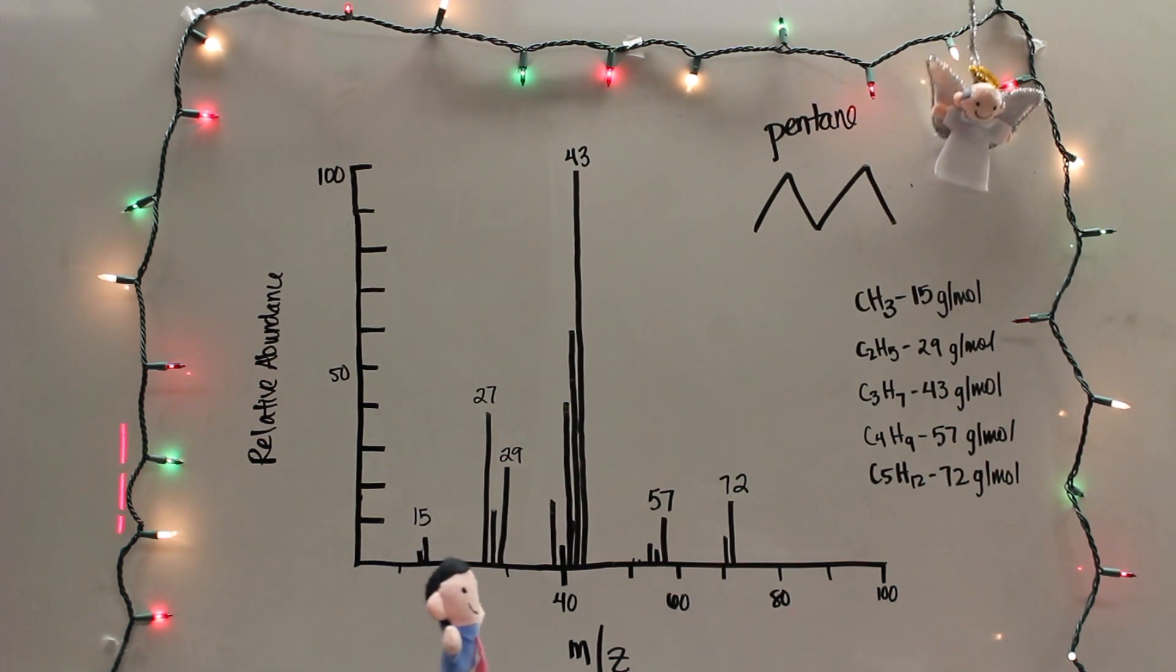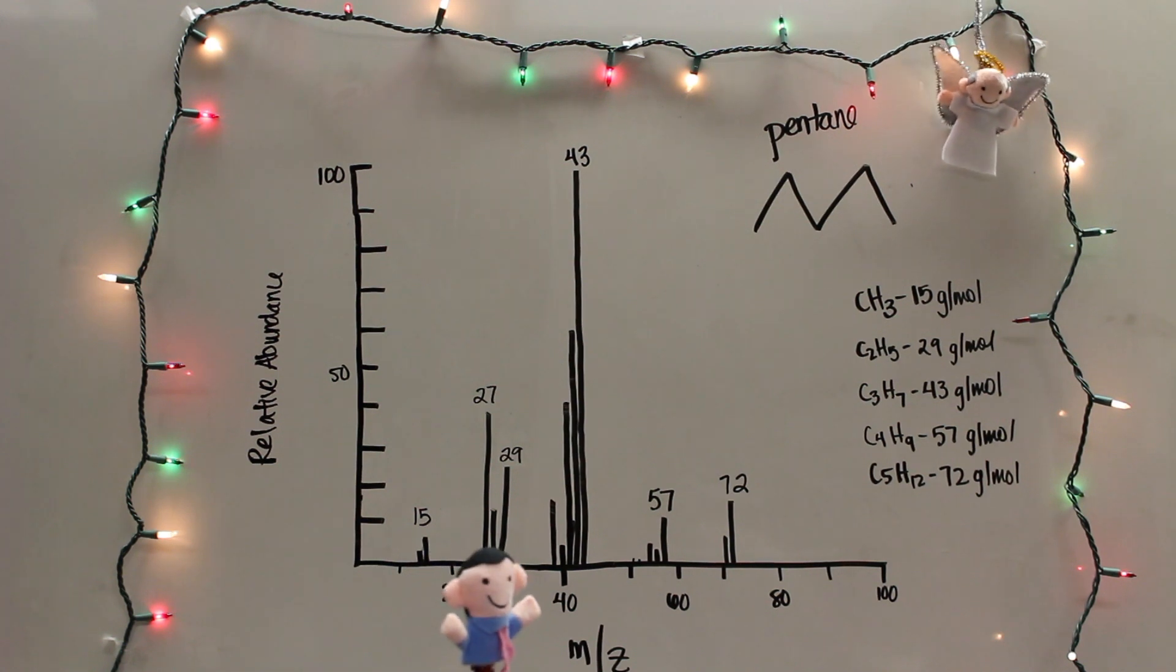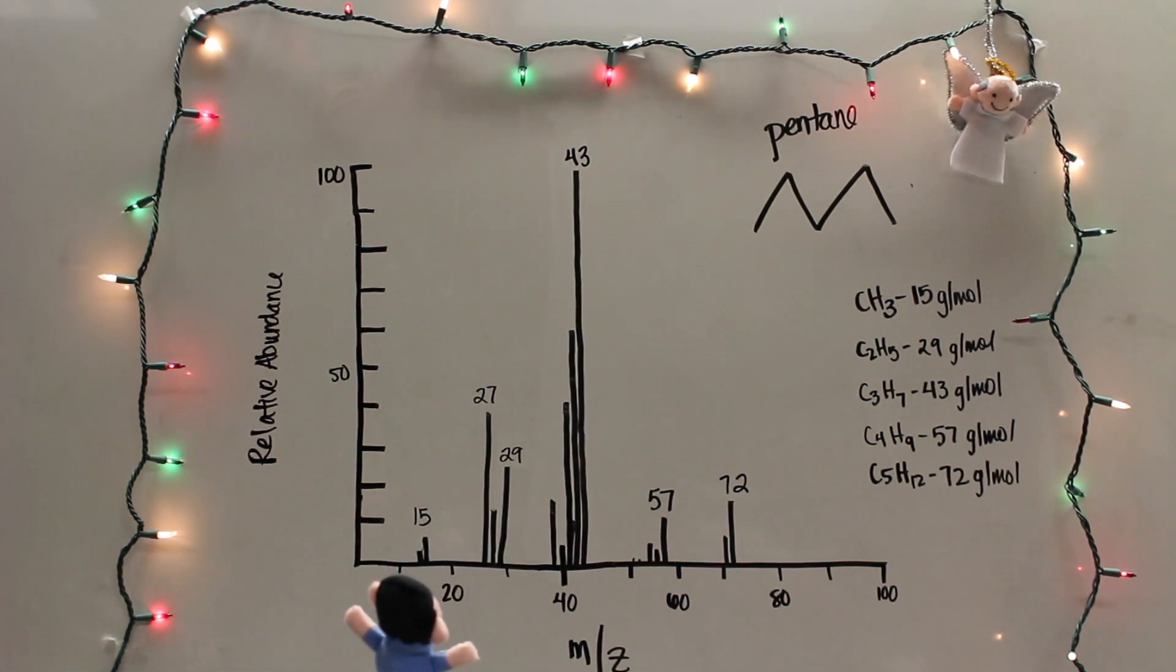So first and foremost, the x-axis represents the mass-to-charge ratio labeled m to z. On the y-axis is the relative abundance of the ions detected, in other words, how much of the fragment is present in the sample.